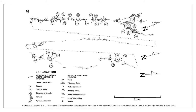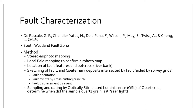The map shows a lot of geomorphic features like offset streams, terraces, spurs, scarps, triangular facets, hanging valleys, saddles, and so on.